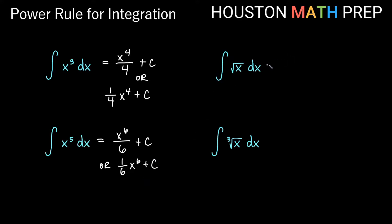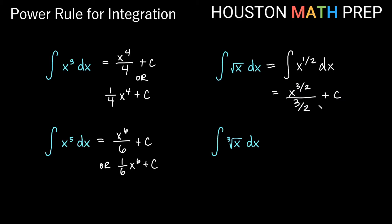The antiderivative of square root x dx. Remember from derivatives, square root x is x to the one-half power. So we're taking the antiderivative of x to the one-half, and the power rule says we add one. One-half plus one is one and a half, also known as three-halves. So we get x to the three-halves power. Now we divide by that new power — divide by three-halves plus c. We don't want a fraction in a fraction, so instead of dividing by three-halves, we multiply by the reciprocal: two-thirds x to the three-halves plus c.